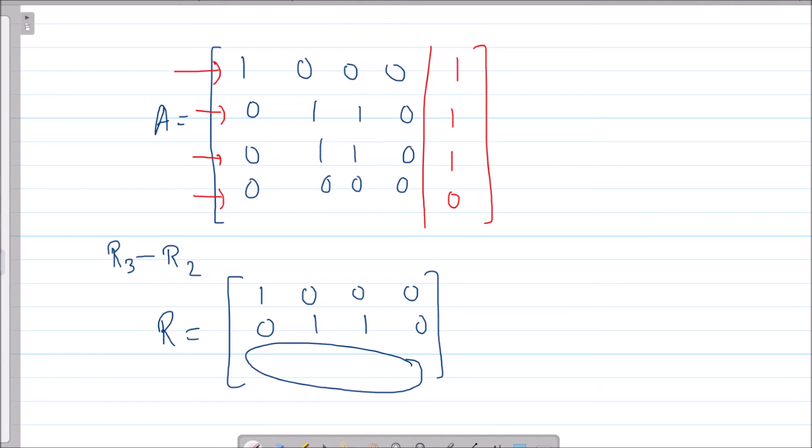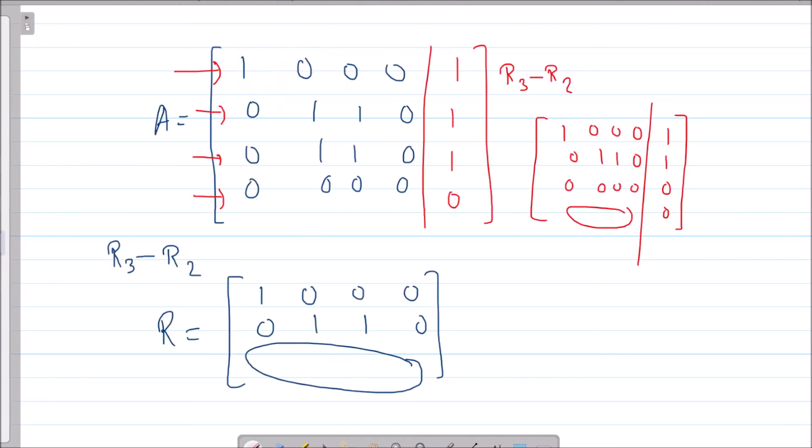The rank of [A|b] is 2. Why? Because once I do R3 - R2, I get [1, 0, 0, 0, 1; 0, 1, 1, 0, 1; 0, 0, 0, 0, 0; 0, 0, 0, 0, 0]. So rank([A|b]) = 2.